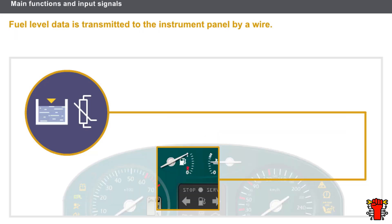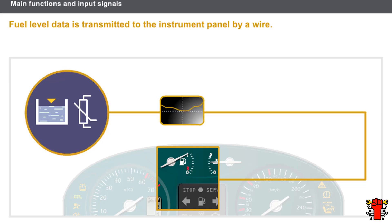Let's now see how a fuel level signal works. The fuel level gauge consists of a float connected to a rheostat. Fuel level data is transmitted to the Instrument Panel by a wire. A warning light comes on when the fuel level reaches the minimum level.